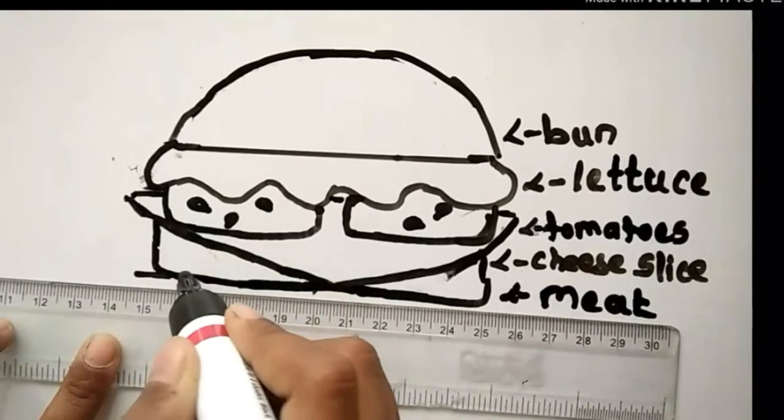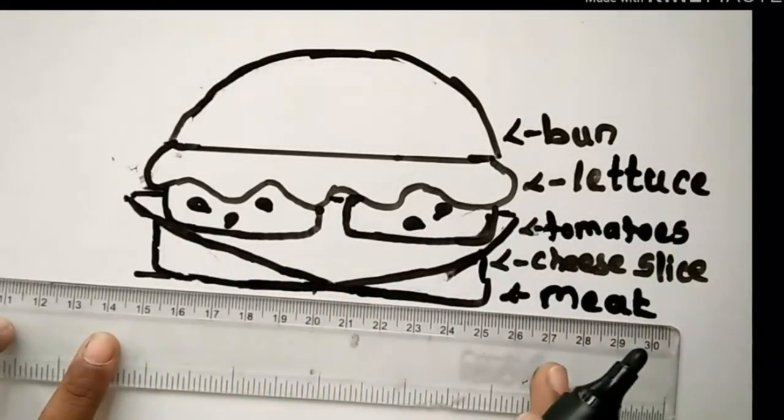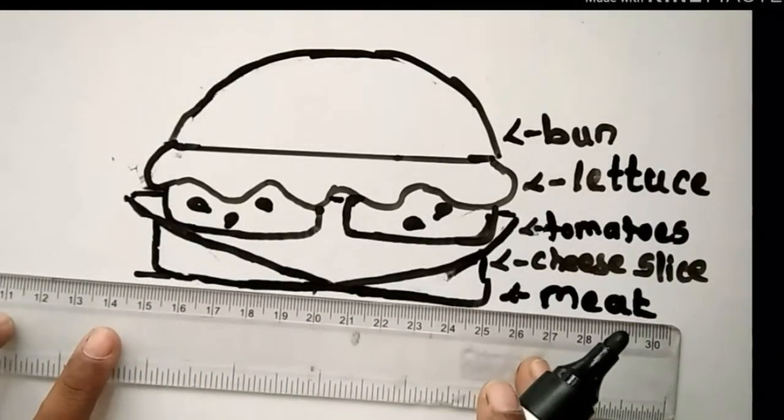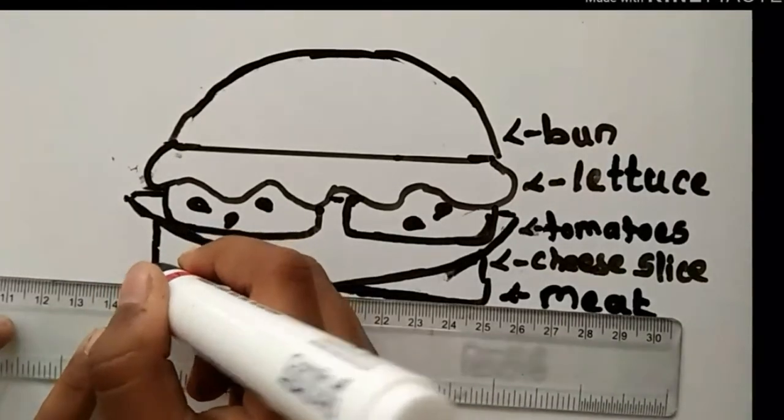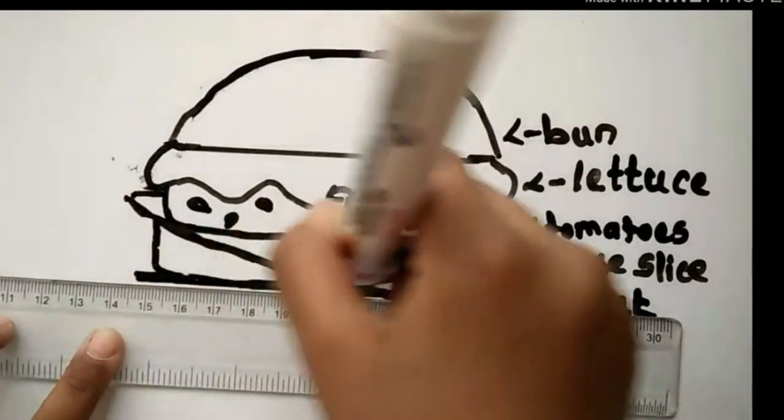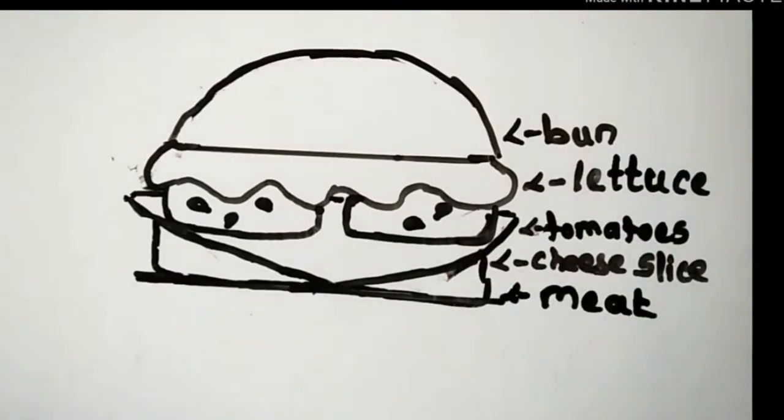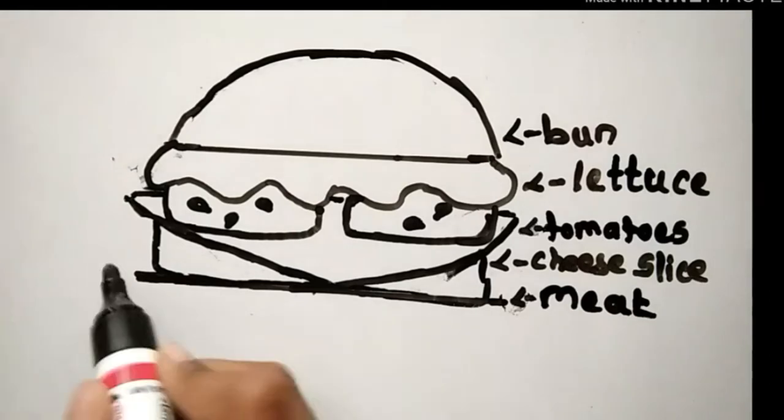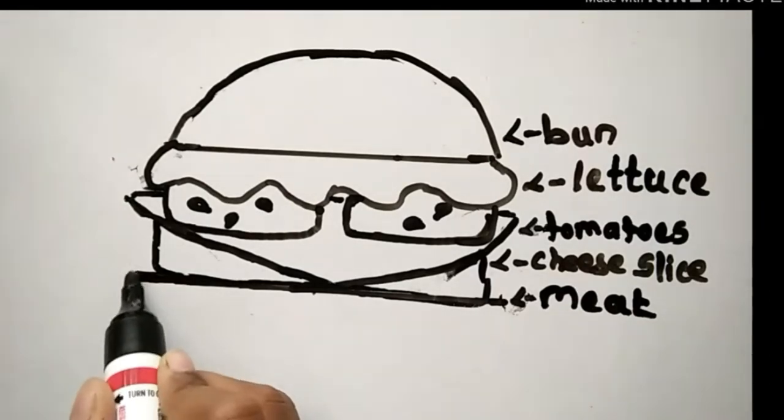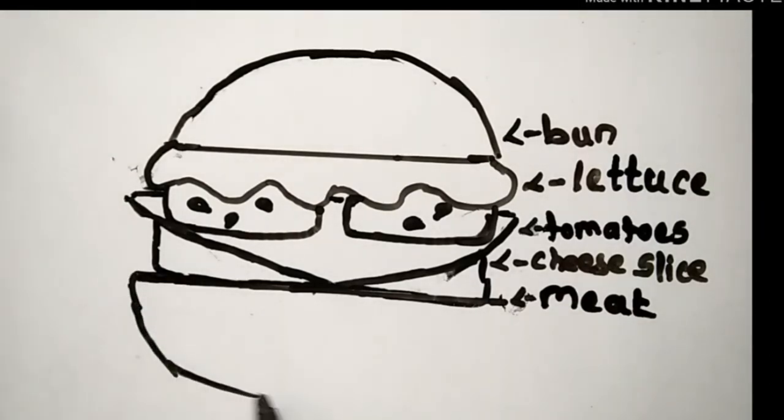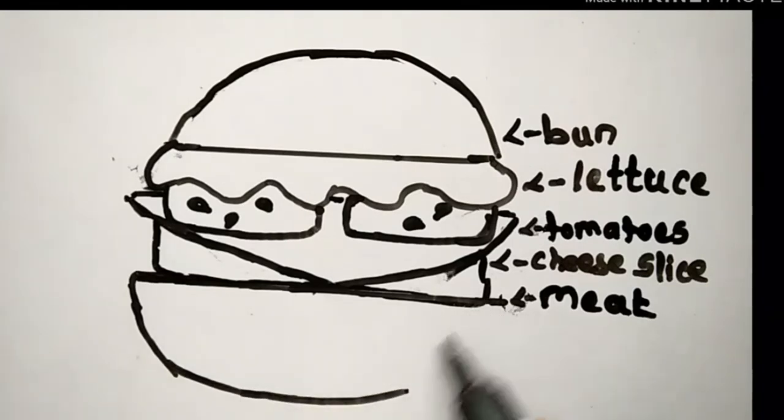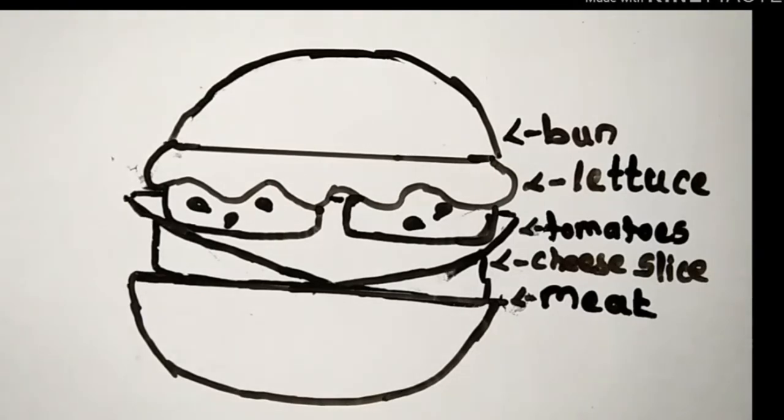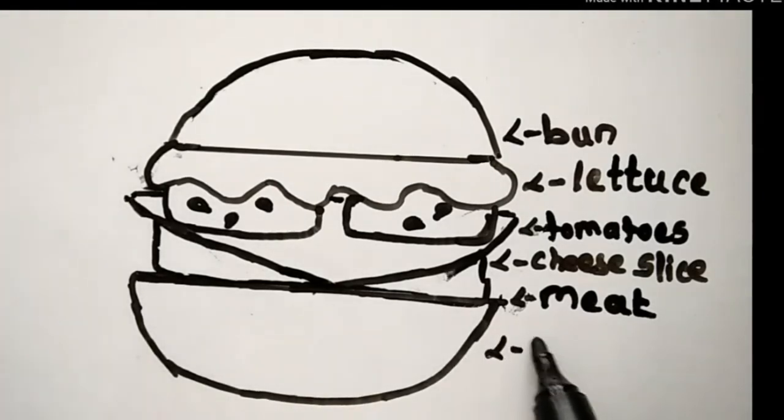And now, this is the last step. The final step is again a bun. We just have to copy the first step but just upside down. So I am done with the second bun.